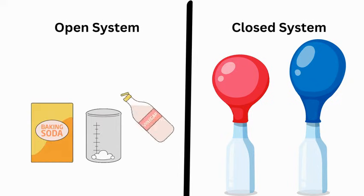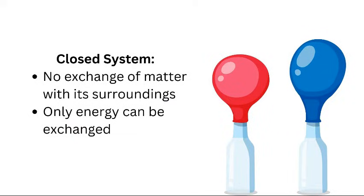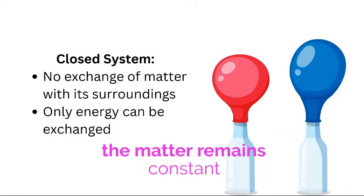Closed vs. Open Systems. A closed system refers to a physical system or environment in which there is no exchange of matter with its surroundings, but energy can still be exchanged between the system and its surroundings. This means that while substances within the system can undergo internal changes and energy transfers, the matter remains constant.